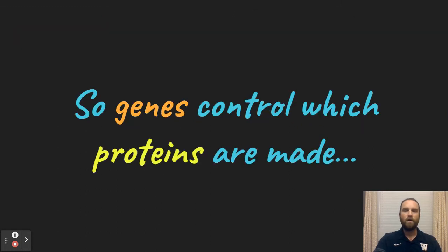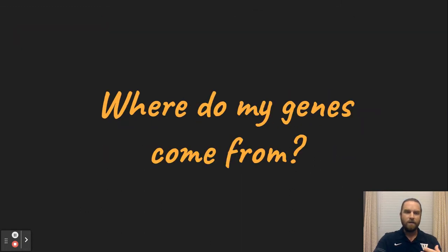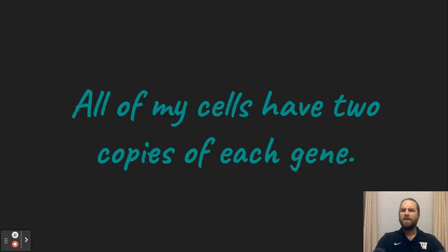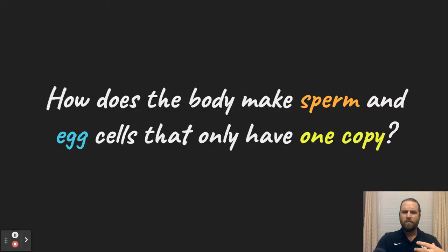So genes control which proteins are made. So where do my genes come from? Well, you get one copy of your genes from your mom and you get one copy from your dad. All of my cells have two copies of each gene, but how does the body make sperm and egg cells that only have one copy?